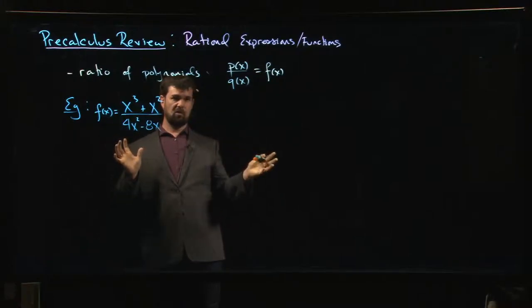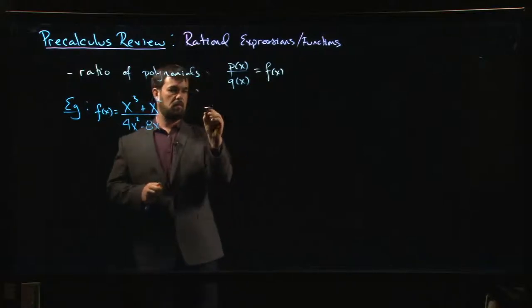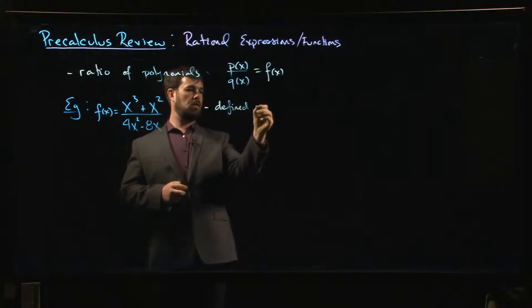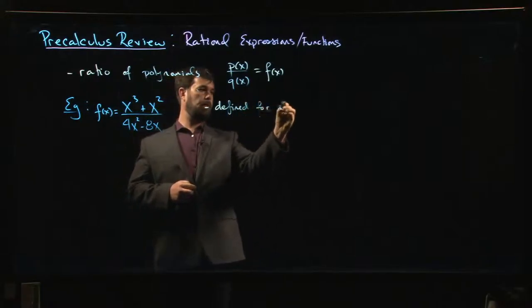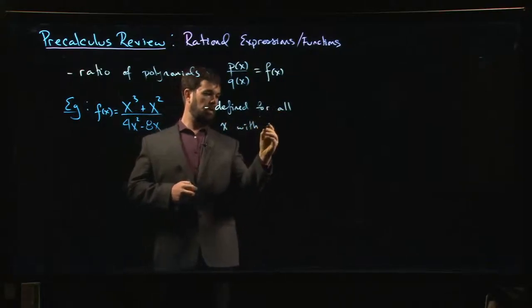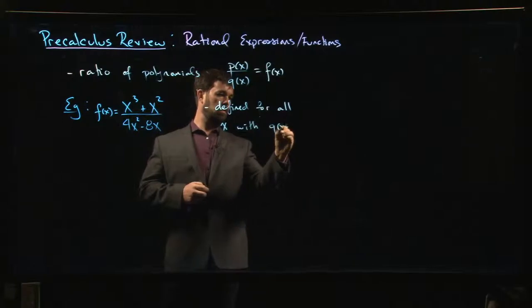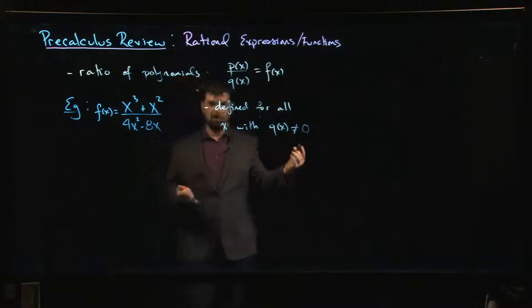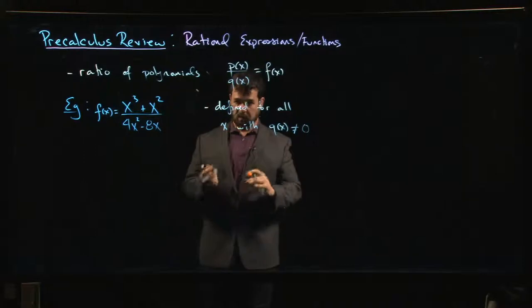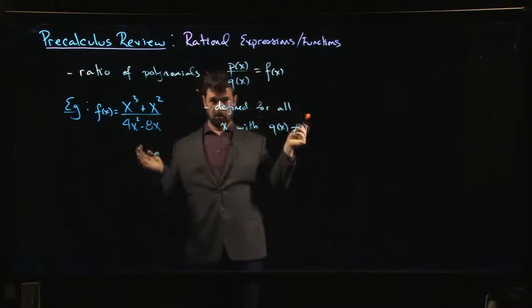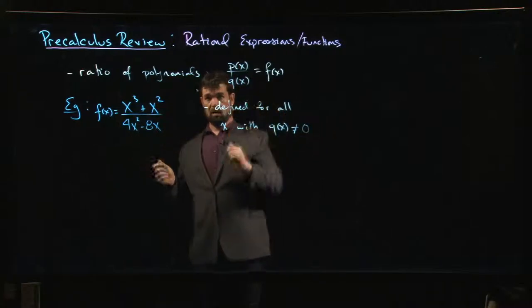For a rational expression or rational function, when is it defined? Well, it's defined for all X for which Q(X) is nonzero. That's the only real restriction here. We can't divide by zero. Otherwise, we know that polynomials are defined everywhere. A ratio of two real numbers is always defined as long as the one on the bottom is not zero.